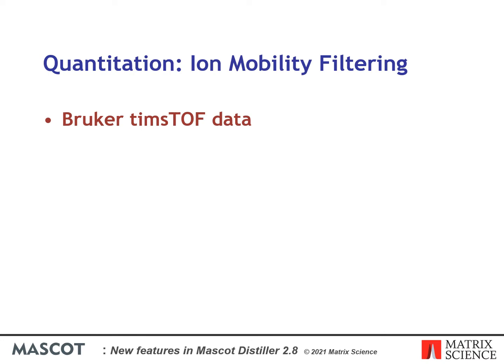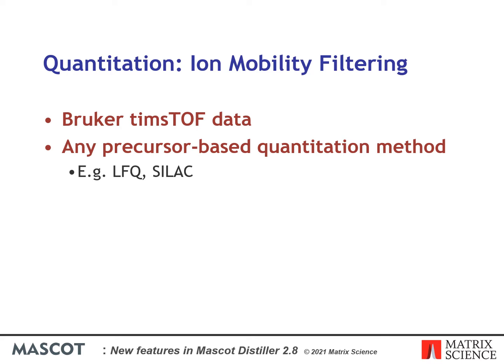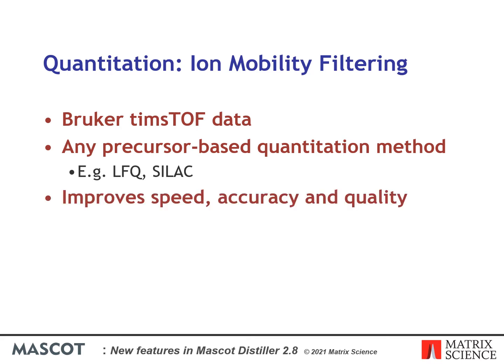Mascot Distiller 2.8 can use the precursor ion mobility values for identified peptides as a filter on the precursor scans during the XIC peak detection steps of any precursor based quantitation method such as SILAC or Label3. The aim is to clean up and improve the quality of the data in the target precursor regions, removing interfering signal, improving accuracy, and giving more reliable quantitation results.